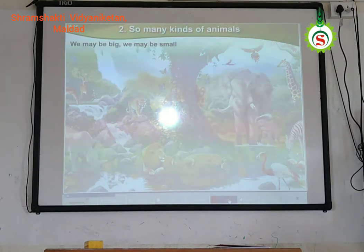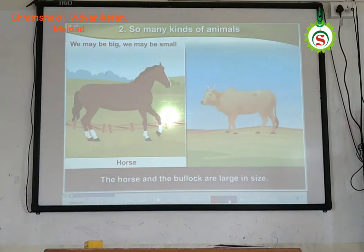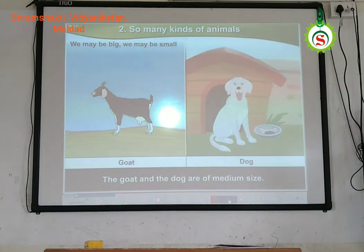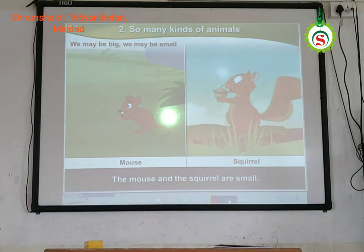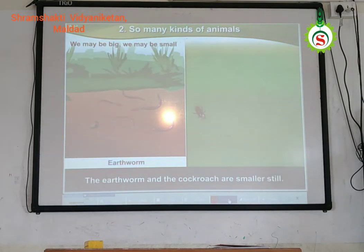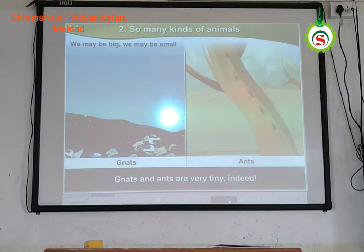We may be big, we may be small. The horse and the bullock are large in size. The goat and the dog are of medium size. The mouse, the moth, and the squirrels are small. The earthworm and the cockroach are smaller still.